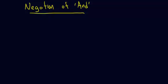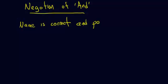Let's say I have the following statement. Let's say I have a login on a website, like a bank account or an email. And I have the statement: the name is correct — you put in your username and it's correct — and the password is correct. Now, what's the negation of this statement?